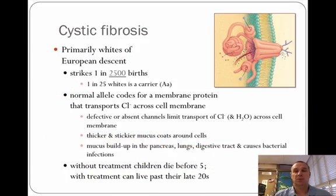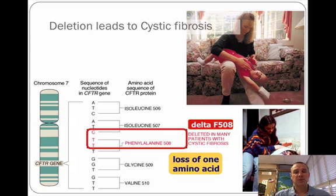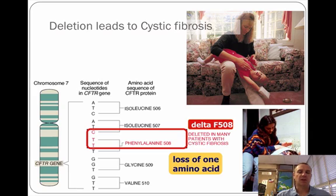Cystic fibrosis, one of the most common diseases in Caucasians of European descent, occurs about once every 2,500 births and is caused by a frameshift mutation. Cystic fibrosis involves a thickening of the mucus, causing problems with breathing, digestion, and other things. People usually don't survive past their late 20s with cystic fibrosis. It is caused by a deletion on chromosome 7, which leads to the loss of one amino acid and basically causes the disease.